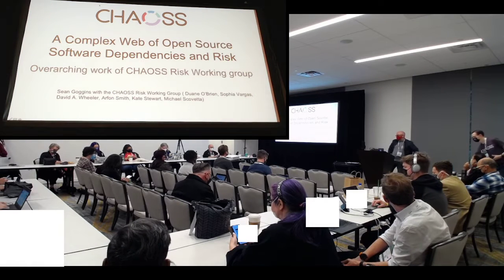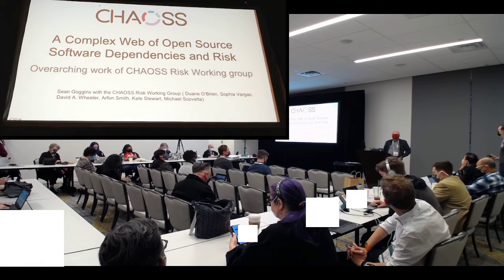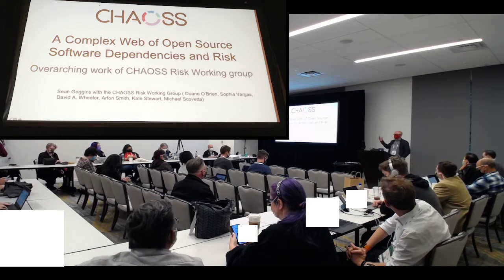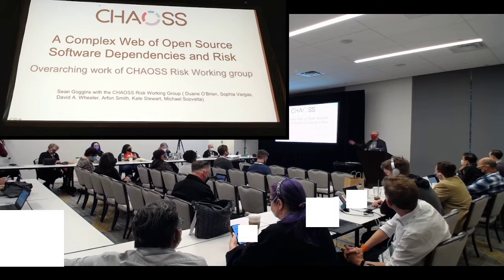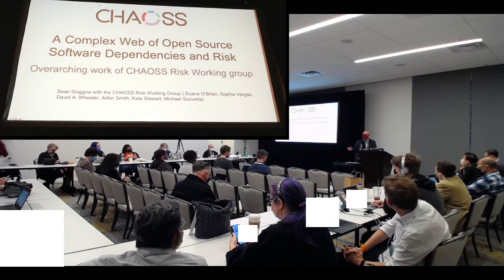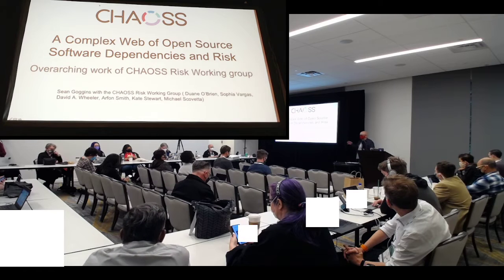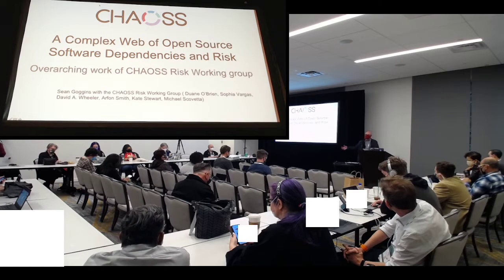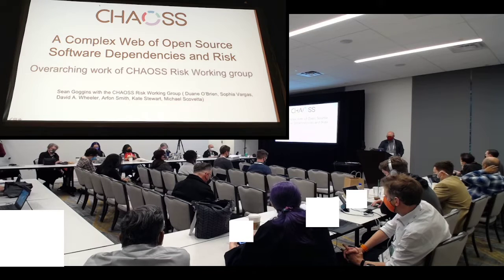I'm going to keep this brief. What we really want to communicate from the risk working group is that a lot of times in chaos we have a problem, we understand it, we know of a range of contained solutions, and we go about building metrics and developing tools for those metrics to reach those solutions.